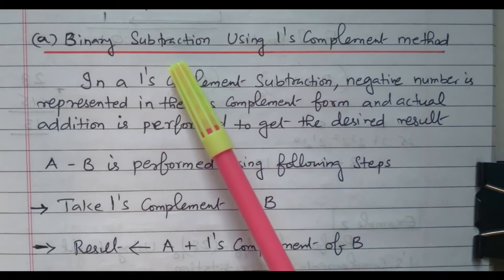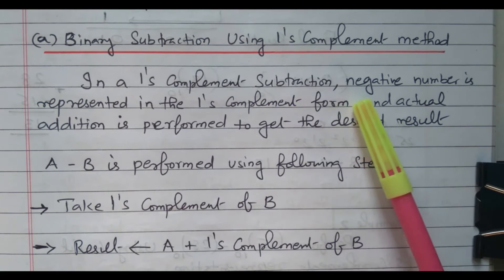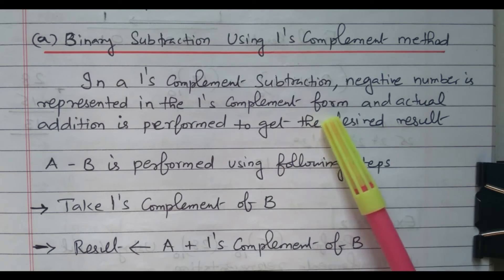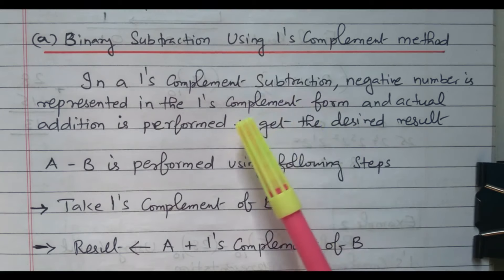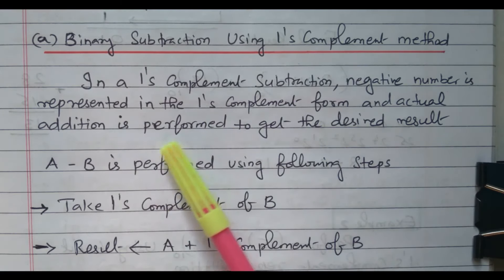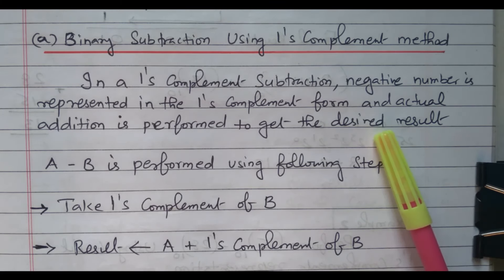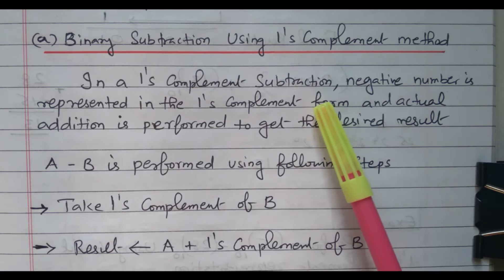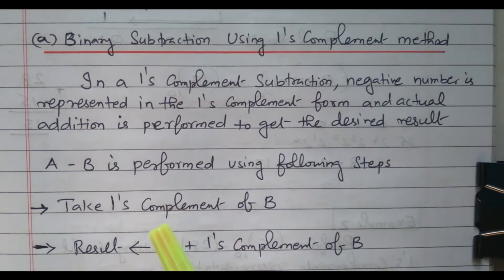Now we will go to the topic: binary subtraction using the one's complement method. In one's complement subtraction, a negative number is represented in one's complemented form. During subtraction, the second number is converted into one's complement, and then addition is performed to get the desired result. The subtraction is not performed directly; instead, the second number is converted into one's complement, then that one's complement number is added with the first number in order to perform the subtraction. So the subtraction is performed by one's complement addition. Now we will see the procedure to perform this subtraction using one's complement.